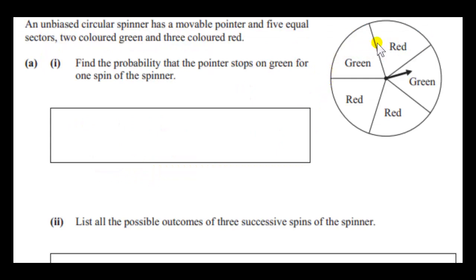An unbiased circular spinner has a movable pointer and five equal sectors, two colored green and three colored red. So we want the probability that the pointer stops on green for one spin of the spinner. So the circular spinner is unbiased. So the pointer is equally likely to point to any of the five sectors. It's an unbiased spinner and the sectors are equal in area or these angles are the same. I should say the areas don't have to be the same. Actually, it's the angles that have to be the same. It's five angles.